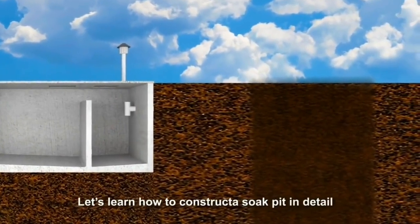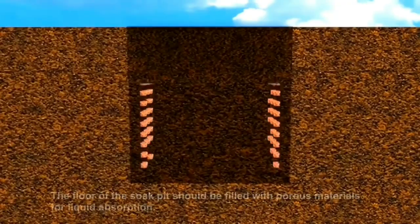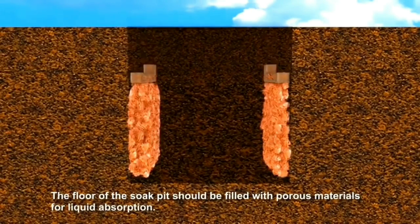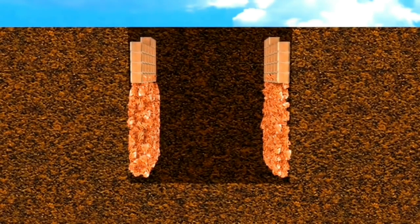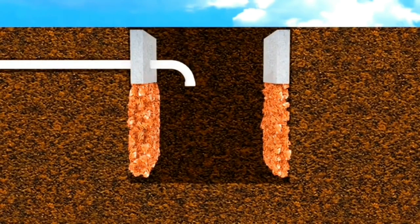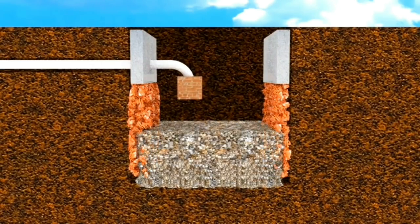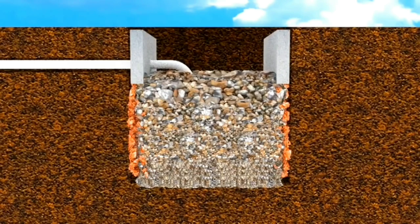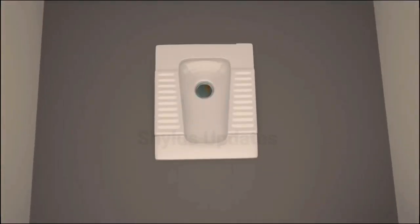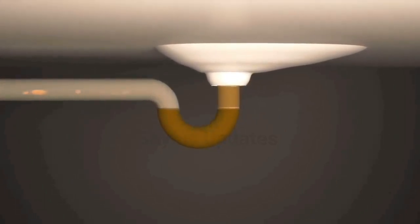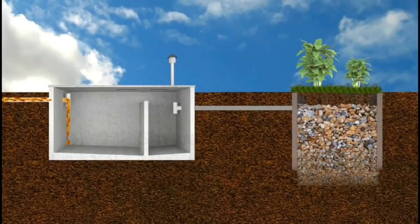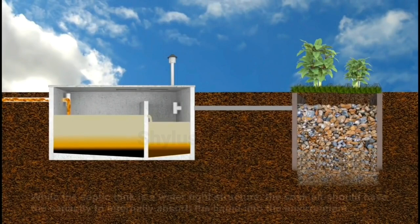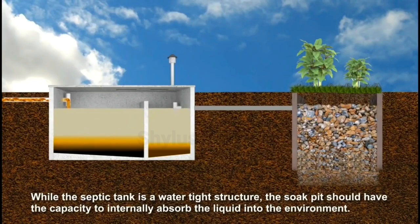Let us learn how to construct a soak pit in detail. The floor of the soak pit should be filled with porous materials for liquid absorption. While the septic tank is a watertight structure, the soak pit should have the capacity to internally absorb the liquid into the environment.